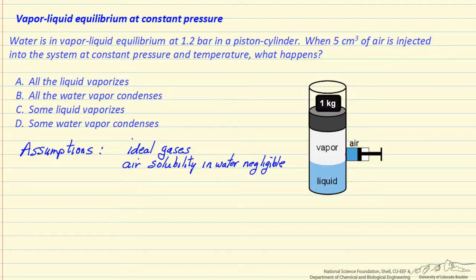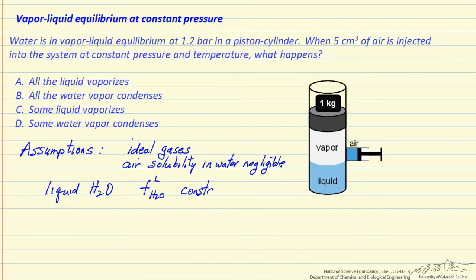We ask ourselves: what does the air change about the system to determine and predict the behavior? Looking at the liquid water: the temperature is constant, the air does not dissolve in the water, so we haven't made any changes in the water. Therefore, the fugacity of water in the liquid phase is constant for this system — it's not changing as we inject the air.